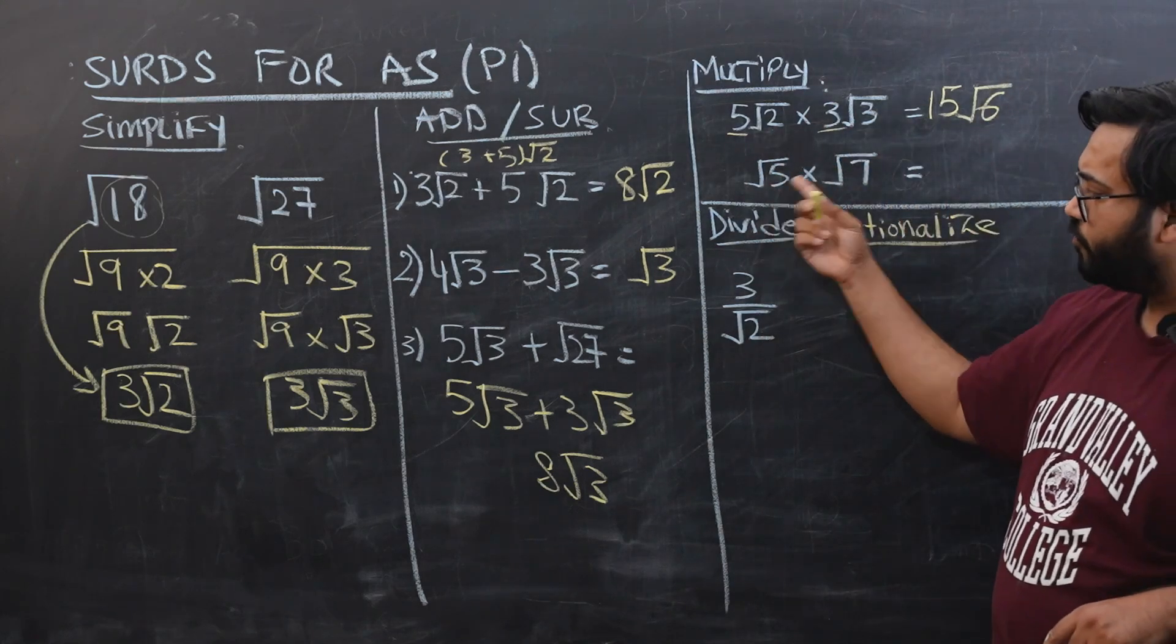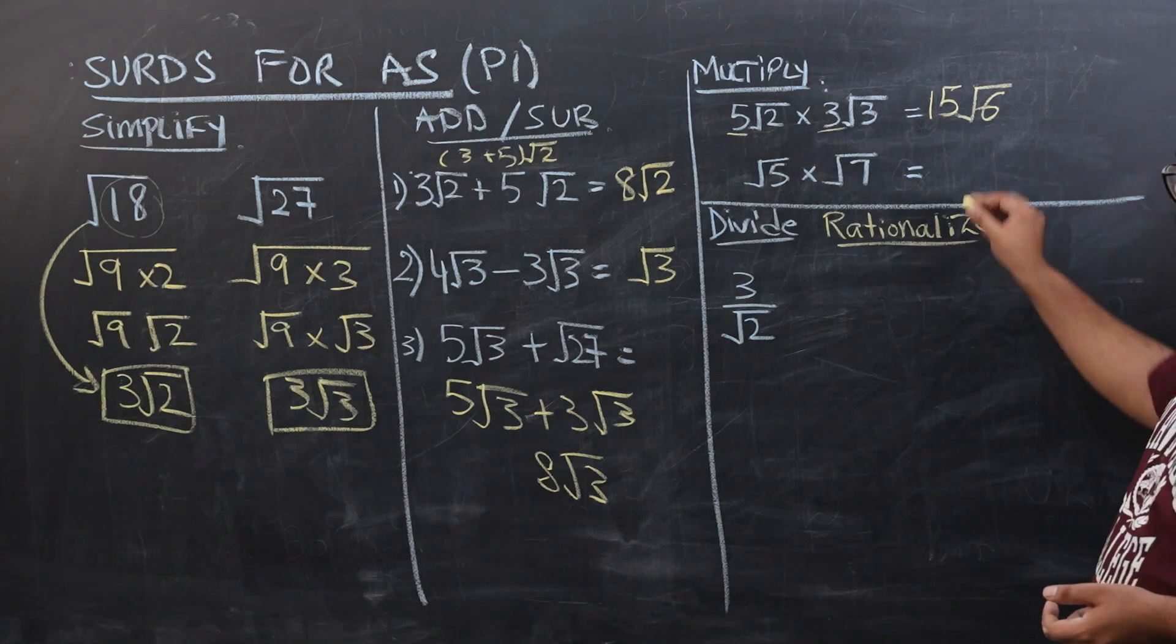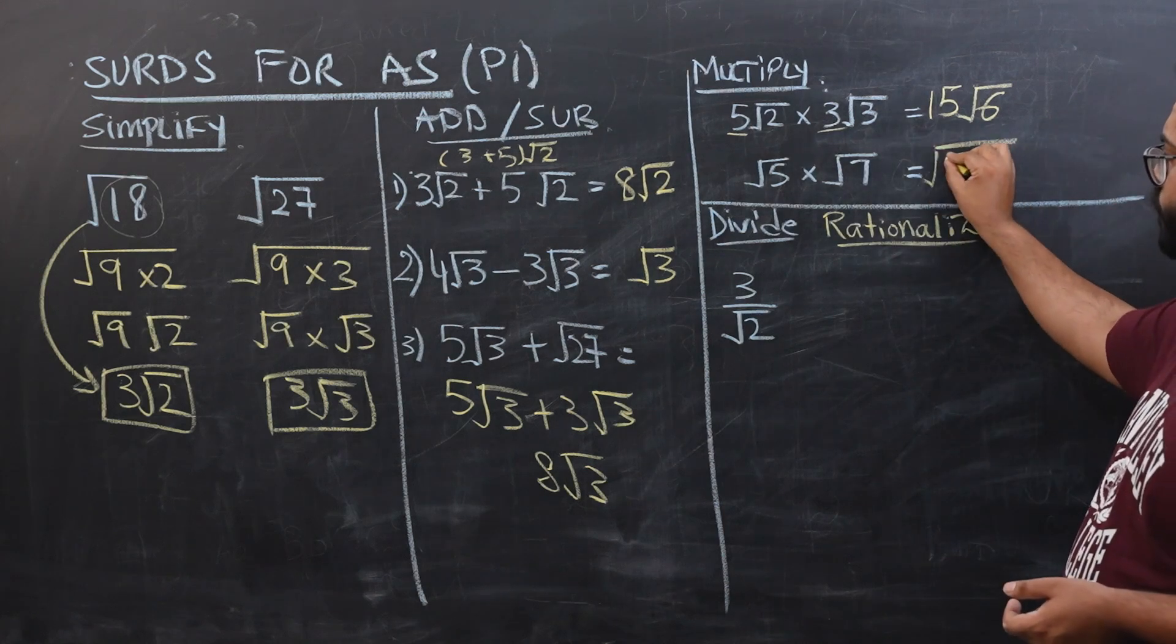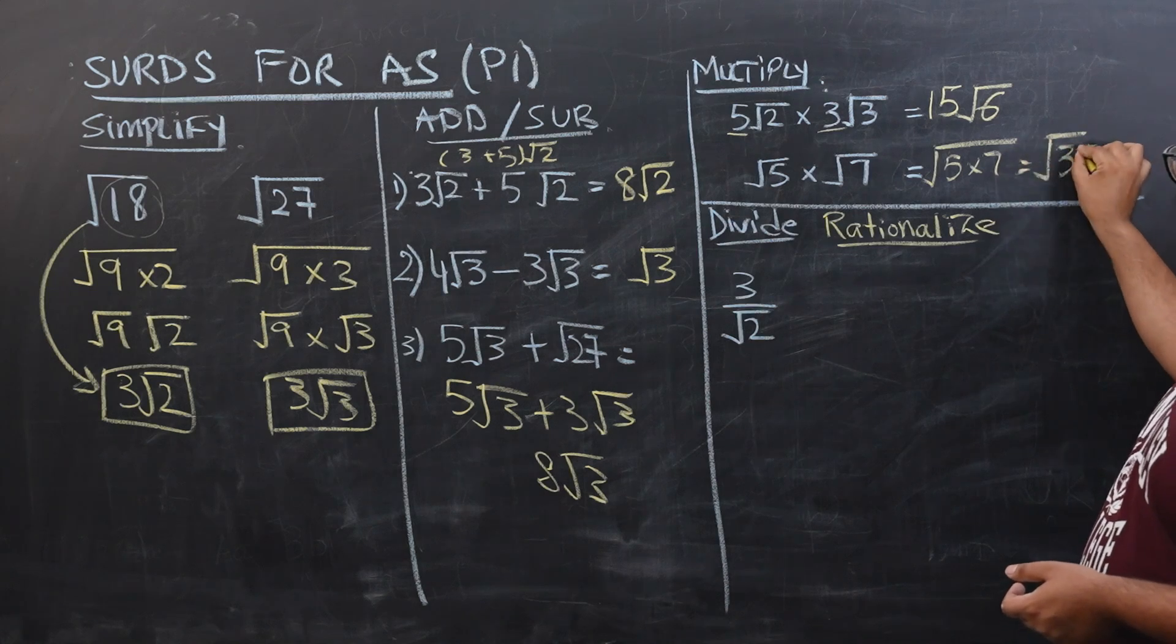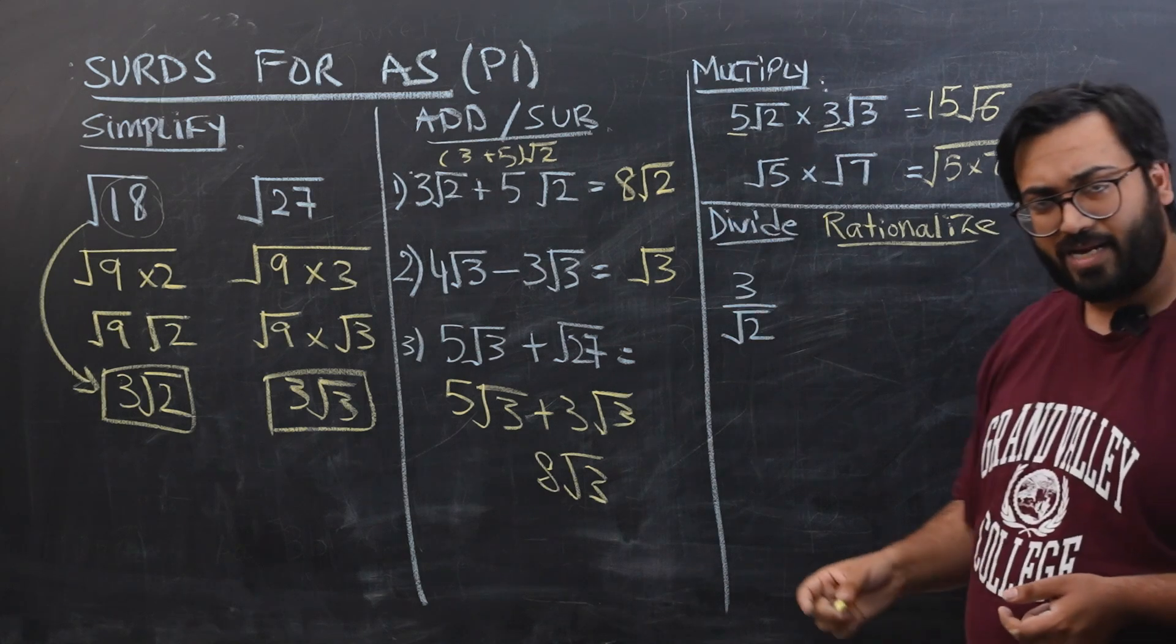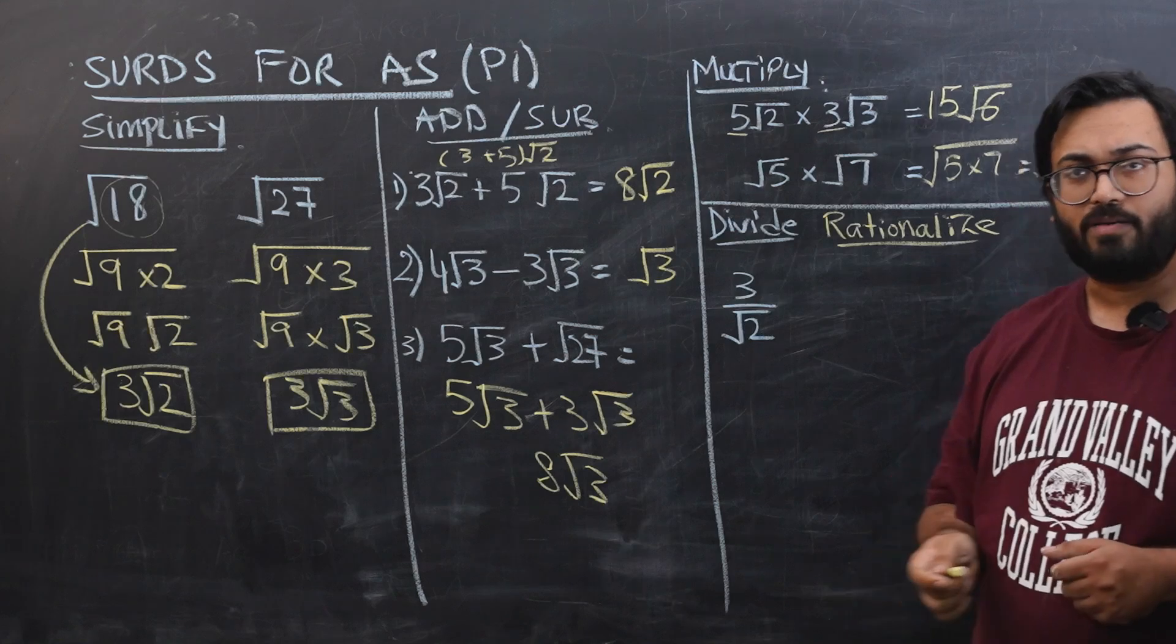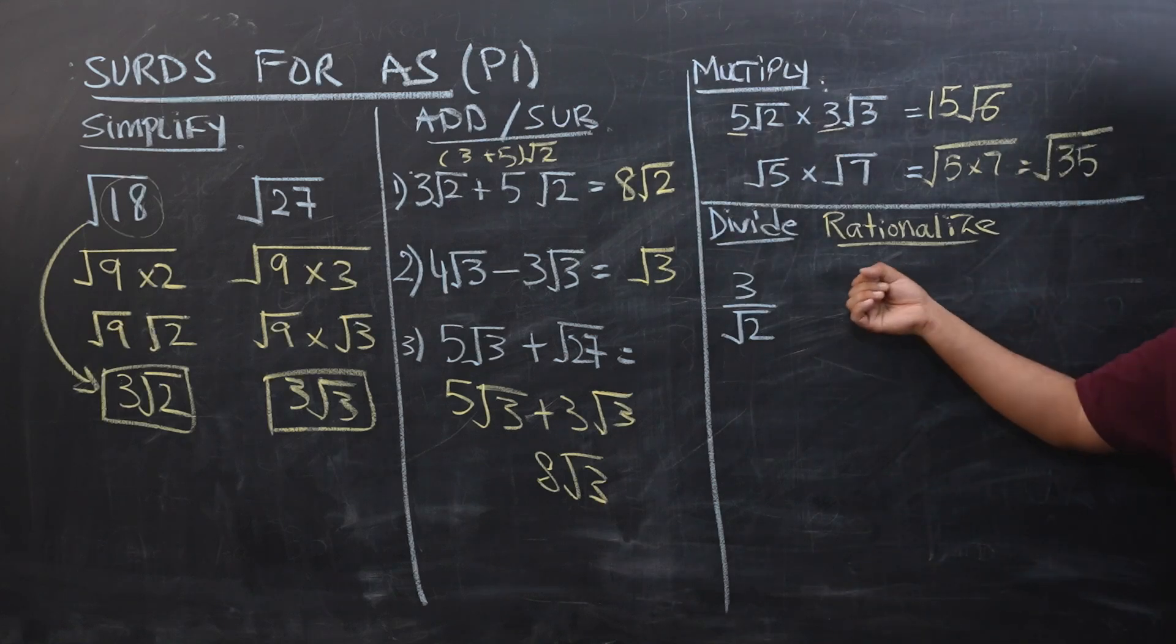Similarly, under root 5 into under root 7, square root 5 into square root 7, you can take square root common, so it would be 5 into 7, so it would be under root of 35. So for square roots, if they're getting multiplied, you can take the square root common and multiply the inner numbers. Now for division, that's a totally different game.